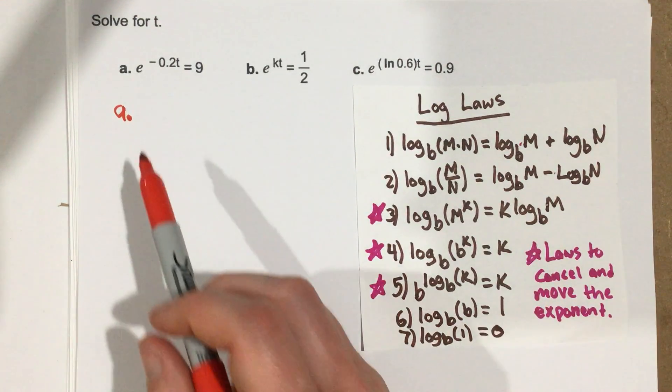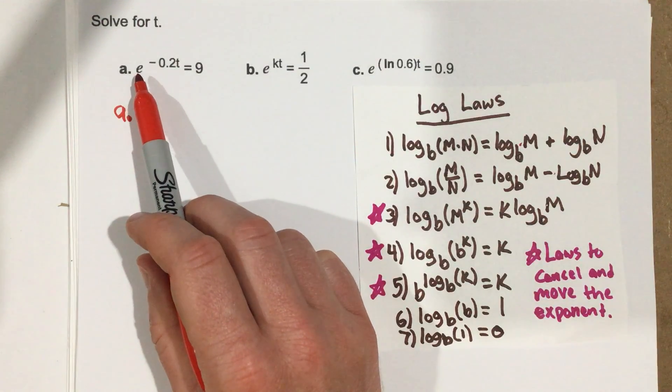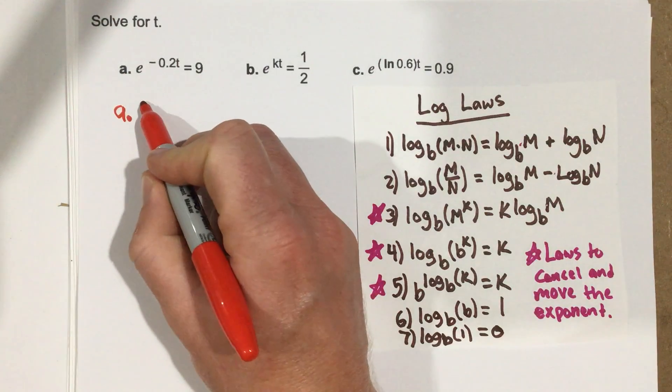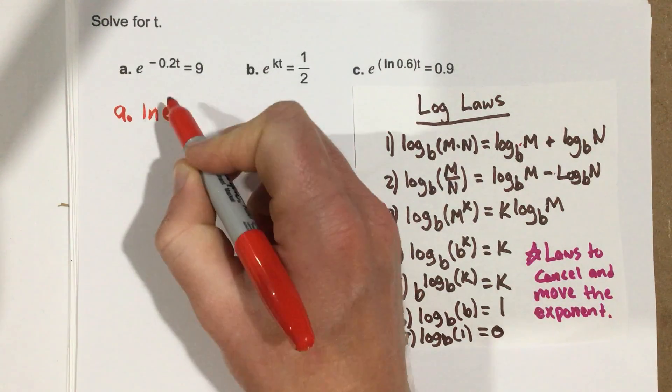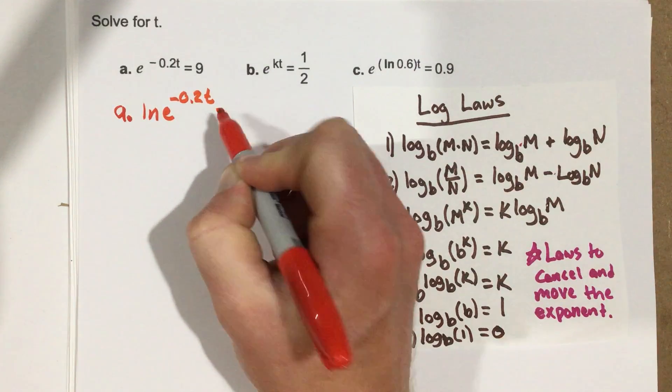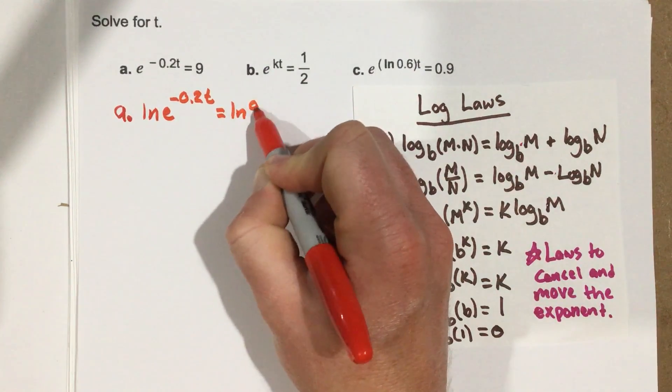All I've got to do is take the logarithm on the left side and the log on the right side, and then I can bring that exponent to the front. So I'm going to say natural log of e to the negative 0.2t equals natural log of 9.